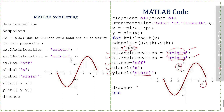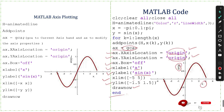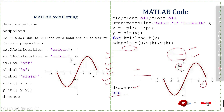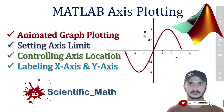We label the x-axis using xlabel with 'x' and label the y-axis using ylabel with 'trigonometric function'. We set the x-axis limit to minus 5 to 5 and the y-axis limit to minus 1.5 to 1.5, then call drawnow. This completes the MATLAB code for animated graph plotting, setting axis limits, controlling axis location, and labeling the axes.